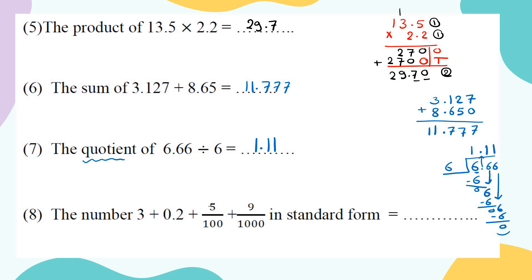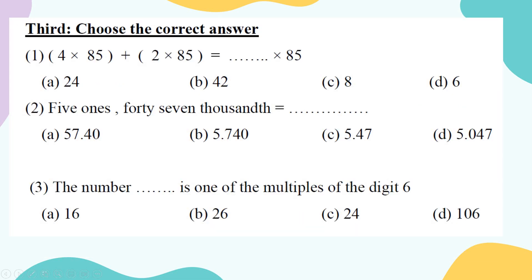Write 3 + 0.2 + 5/100 + 9/1000 in standard form. Convert fractions to decimals: 5/100 means put the numerator and count two places for two zeros — giving 0.05. For 9/1000, count three places — giving 0.009. Now combine: whole number 3, then decimal point, tenths is 2, hundredths is 5, thousandths is 9. Standard form: 3.259.